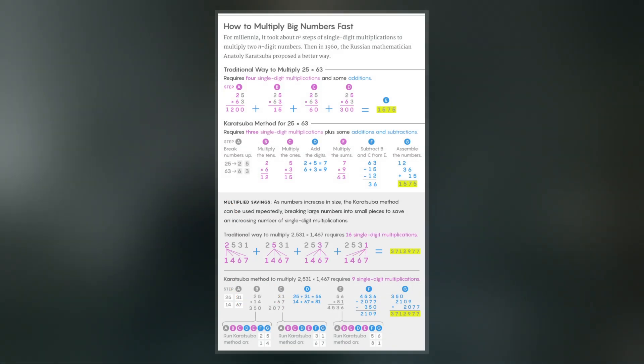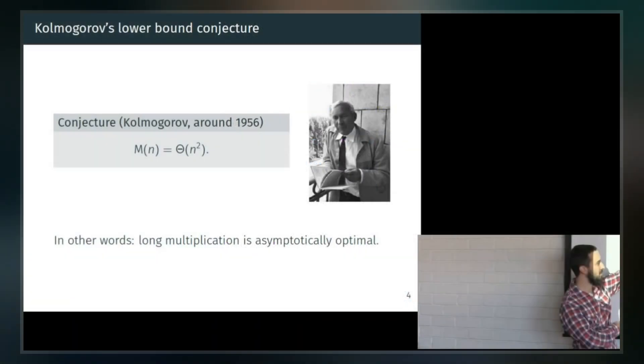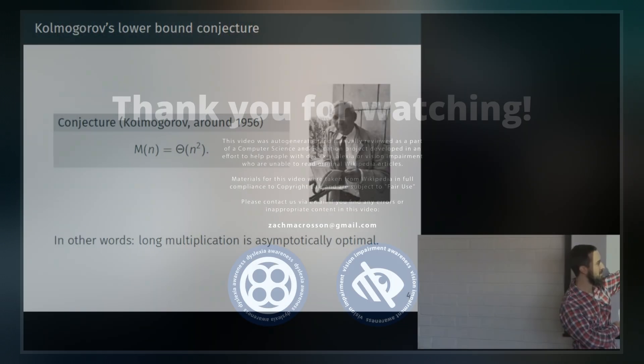The GNU multi-precision library uses it for values of at least 1728 to 7808 64-bit words, depending on architecture.